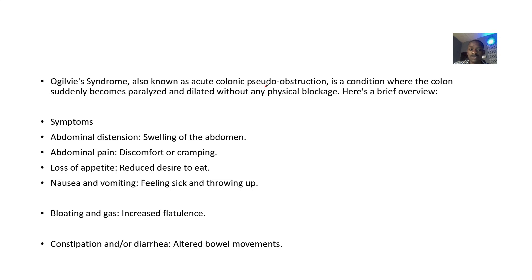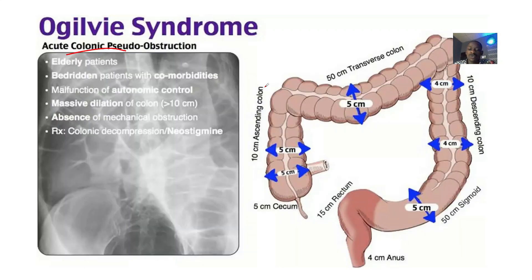Ogilvy syndrome is a condition where the colon suddenly becomes paralyzed and dilated without any physical blockage. Your colon is dilated but it's paralyzed, so it cannot make peristaltic movements — you cannot do peristalsis. So food cannot move along it, and there's no mechanical blockage.